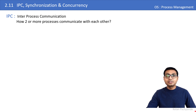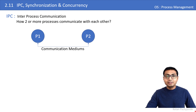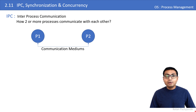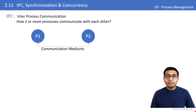When two processes want to share something, they have to store the data in some common place. As I explained about the process structure earlier, there are four sections created for a process: code section, static data, dynamic data, and runtime stack. If you haven't gone through that video, please do so first and then continue with this one.